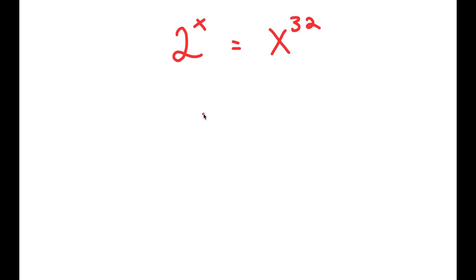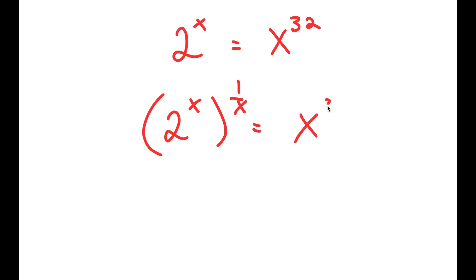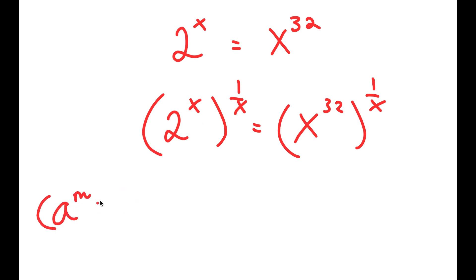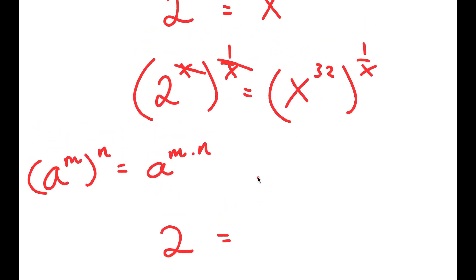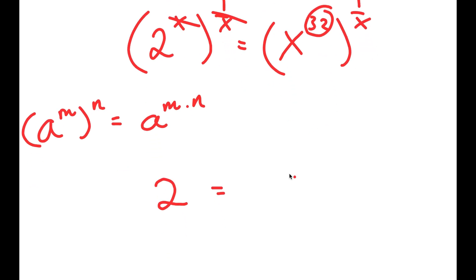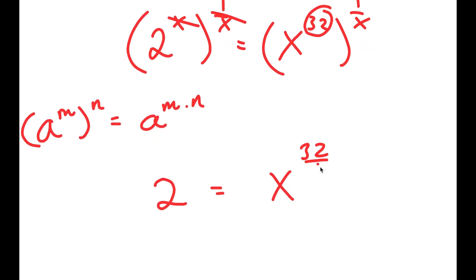To solve this, I'm going to first start by taking the power of 1 over x on both sides. So I get 2 to the power of x, to the power of 1 over x, is equal to x to the power of 32, to the power of 1 over x. The reason I did this is because a to the power of m to the power of n equals a to the power of m times n — so x and 1 over x cancel out, leaving just 2 on the left-hand side, and 32 times 1 over x gives 32 over x on the right.